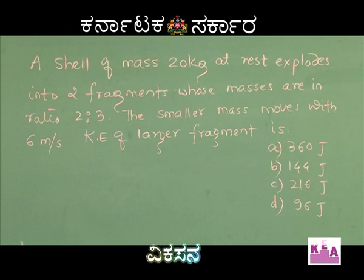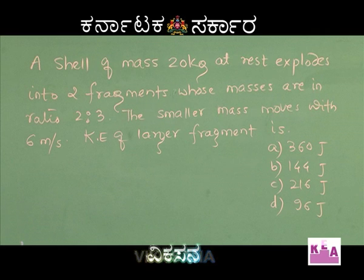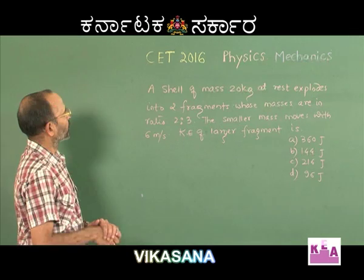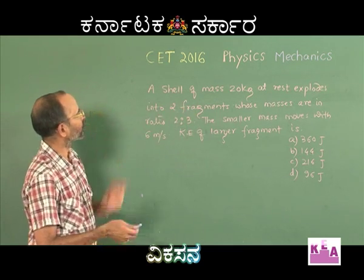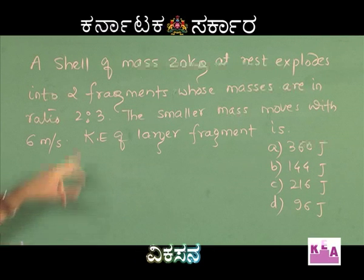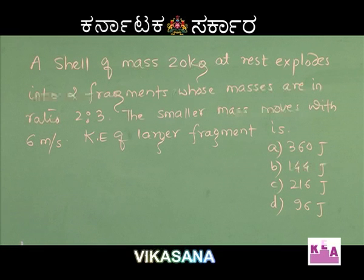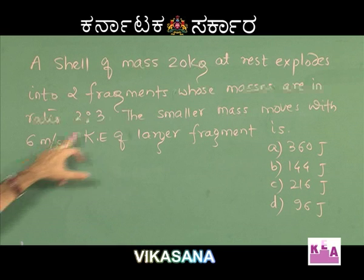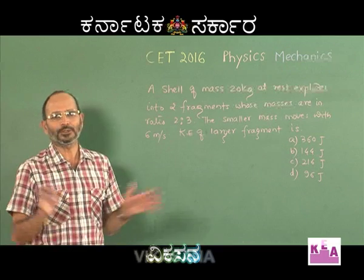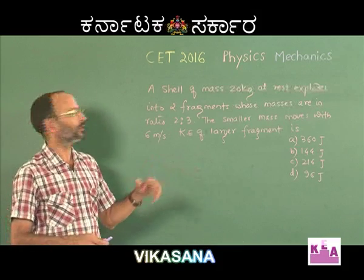A shell of mass 20 kg at rest explodes into two fragments whose masses are in the ratio 2:3. The smaller mass moves with a velocity of 6 meters per second. You have to find the kinetic energy of the larger fragment. Since the shell was initially at rest, its initial momentum is zero. We will conserve momentum before and after the explosion to find the velocity of the larger fragment.